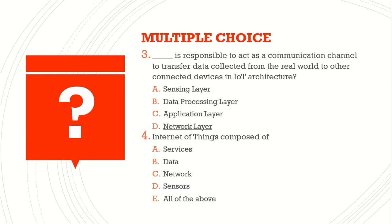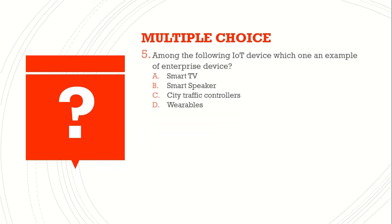Question number five: among the following IoT devices, which one is an example of an enterprise device? A) smart TV, B) smart speaker, C) city traffic controller, D) wearable. The answer is C) city traffic controller.